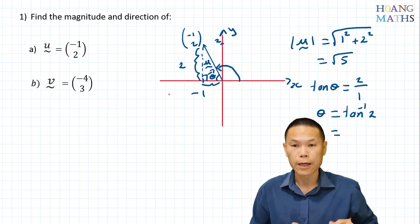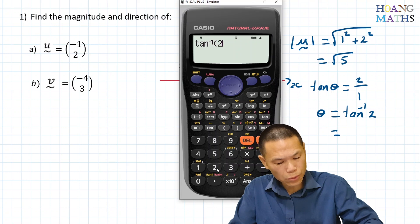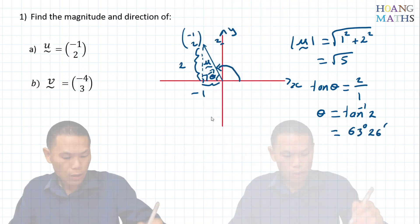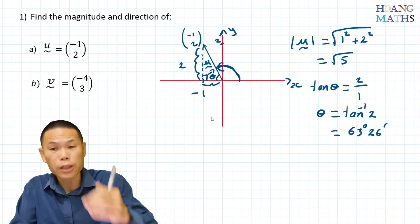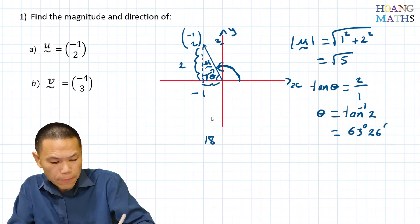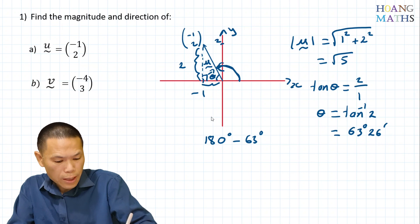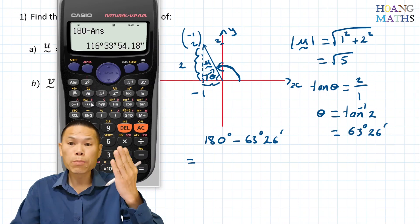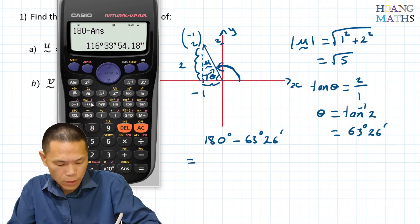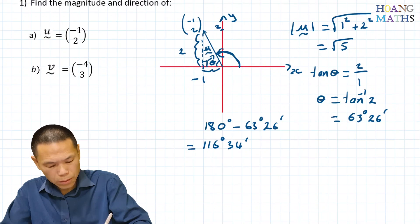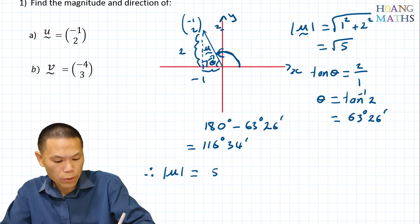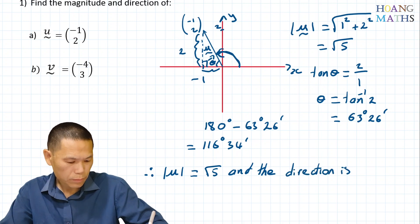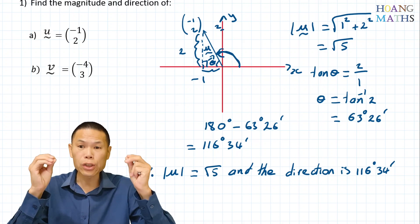I just put that on my calculator — shift tan 2 equals, then press the degrees-minutes button: 63 degrees and 26 minutes. Therefore to work out the direction of the vector, we go 180 degrees minus 63 degrees and 26 minutes. Going 180 minus the answer and pressing the minutes button gives me 116 degrees and 34 minutes. So the magnitude of U is square root of 5, and the direction is 116 degrees and 34 minutes.